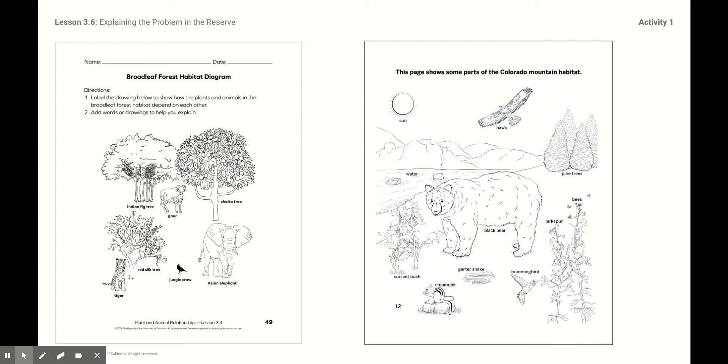They all live off of each other. The same way, if you look at the Colorado Mountain habitat, the hawk needs to eat the snake. The chipmunk needs to eat the pine tree seeds so that he can disperse the seeds and more pine trees can grow. And the same thing with the hummingbird and the black bear. They eat from the larkspur bushes and the currant bushes so that more currant bushes can grow.